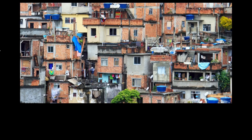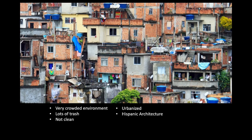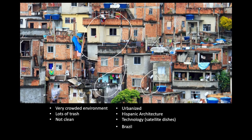Here's the next one. It's a very crowded environment, so there might be a high population. There's lots of trash, so it's not really clean, and it's not really developed. But it is urbanized — we see buildings and clusters of people. There's Hispanic architecture, so this style of building is pretty Hispanic and we might be in Latin America. There's some technology — satellite dishes and wires. This is Brazil; these are the favelas, also known as squatter settlements. Squatter settlements develop because urbanization happens so quickly that there's not enough affordable space in the urban city, so people build these illegal settlements. They have some cultural elements and technology, but it's very crowded, with lots of trash, poor sanitation, and high risk for disease.